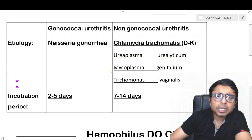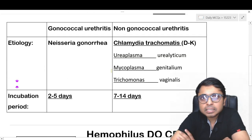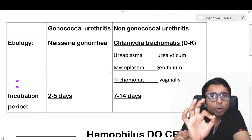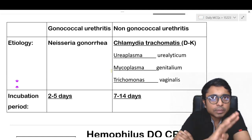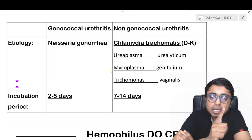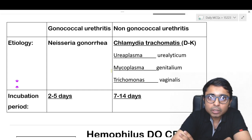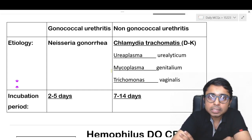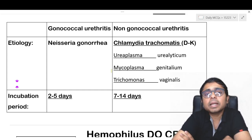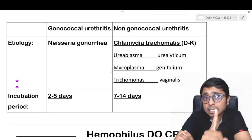So let us look at urethritis very briefly. We have two broad varieties: one is gonococcal and the other one is non-gonococcal urethritis. Gonococcal urethritis is caused by Neisseria gonorrhoeae. Non-gonococcal is caused by Ureaplasma urealyticum, Chlamydia trachomatis, Mycoplasma genitalium, and Trichomonas vaginalis.